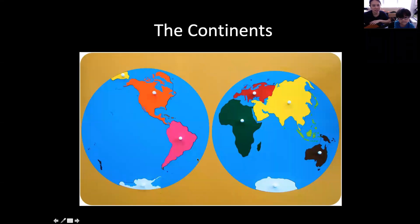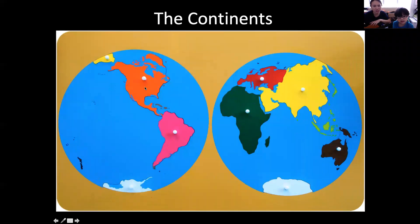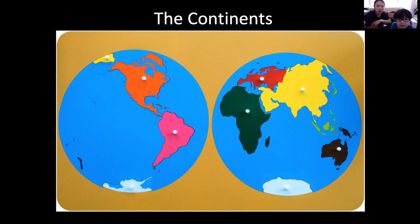This is... what's this, Gray? North America — the continents. Let's name the seven continents. There are seven continents on this map.